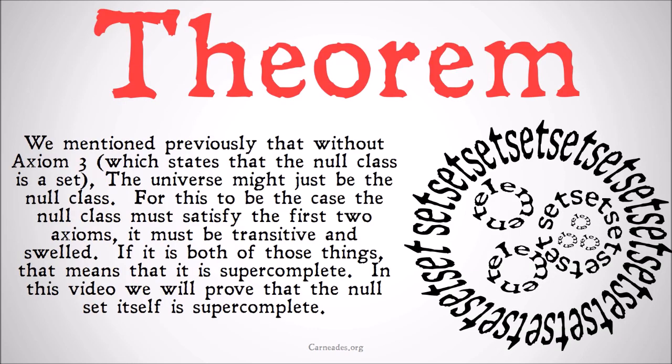So we mentioned previously that without axiom 3, which states that the null class is a set, the universe might just be the null class. For this to be the case, the null class must satisfy only the first two axioms because those were all we had before axiom 3.